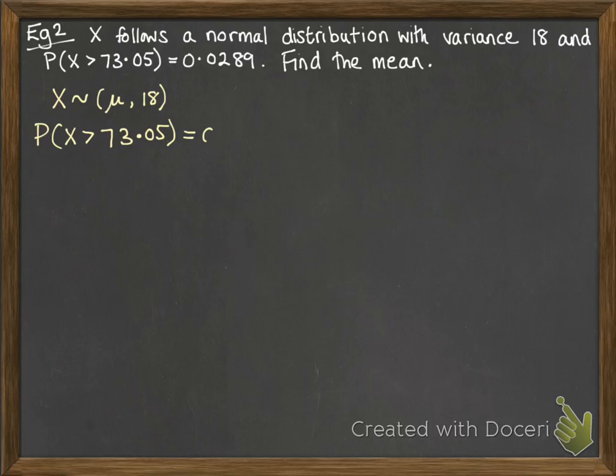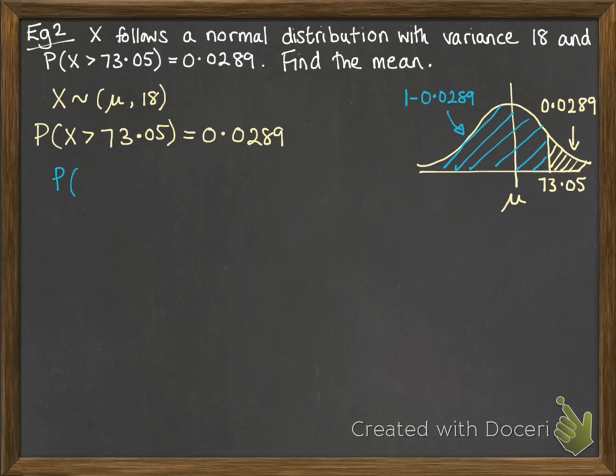We're told this probability. Let's draw a picture of it. So above that 73.05 is 0.0289, so below it would be 1 minus, so therefore the probability that x was less than 73.05 would be 0.9711.